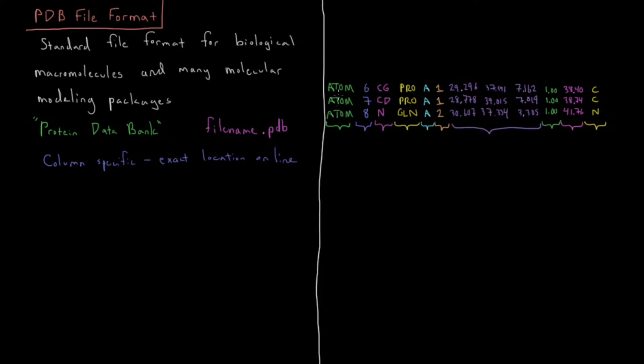The first thing we have on the line here is the first part which is called the record value. There are many types of records in a PDB file.